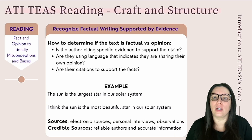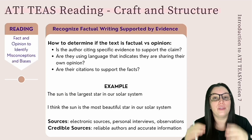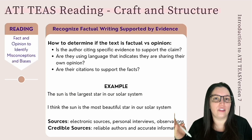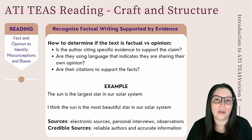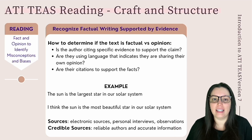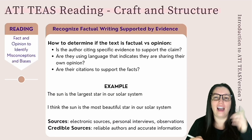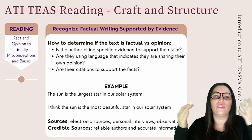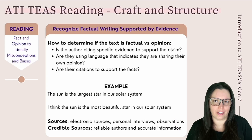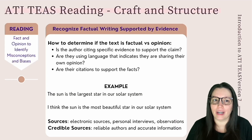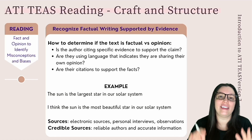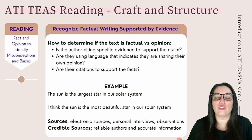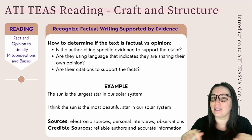For example, the sentence 'The sun is the largest star in the solar system' is a fact — it's supported by scientific evidence. Now compare that to 'I think the sun is the most beautiful star in the solar system.' That's an opinion: the author is sharing their own thoughts by using the phrase 'I think.' When reading a text, identifying these differences helps you understand the author's point of view and spot misconceptions or biases.